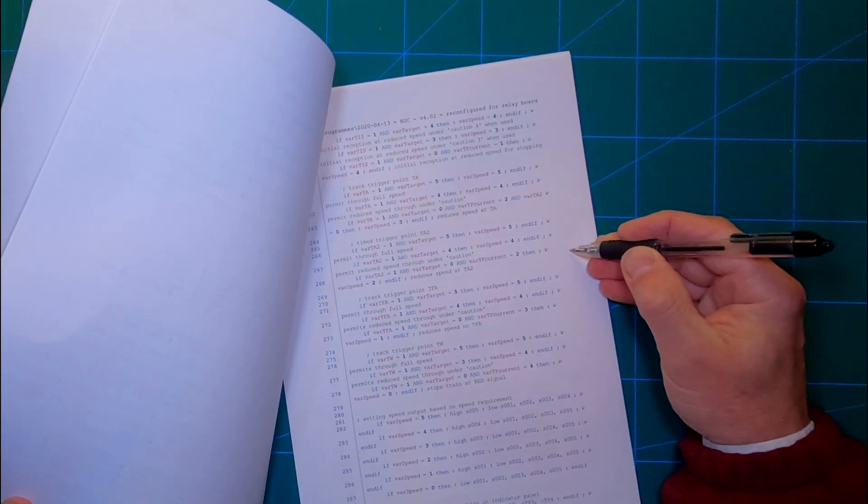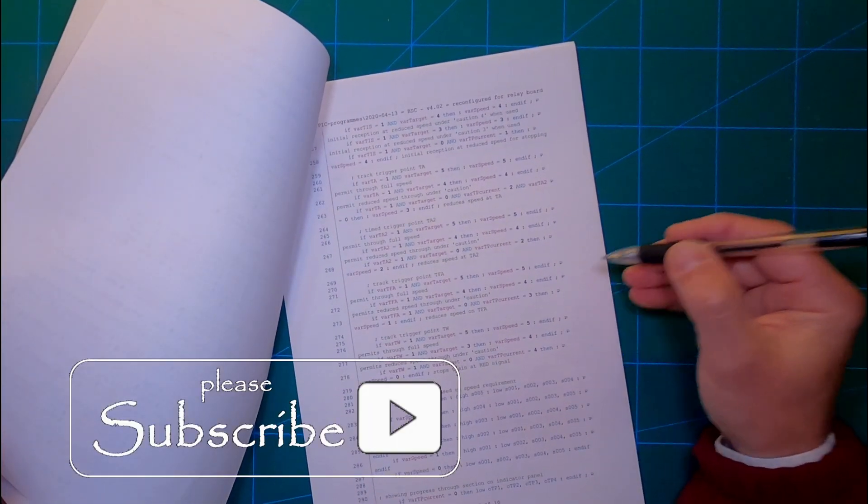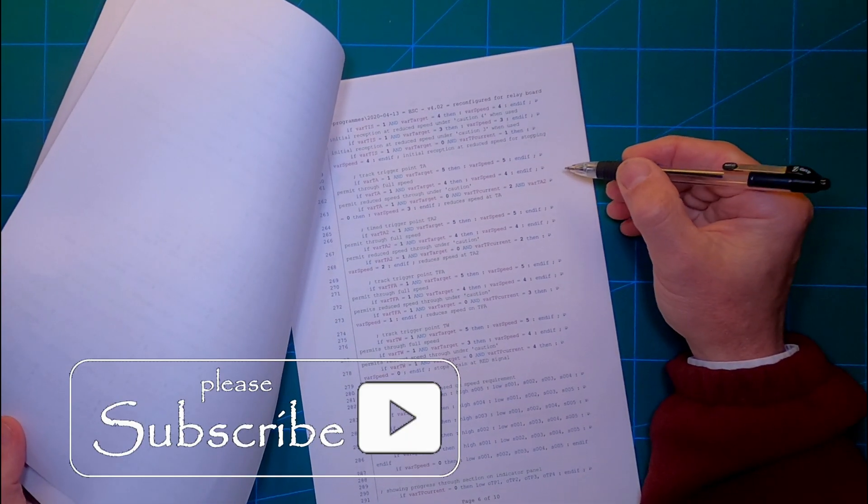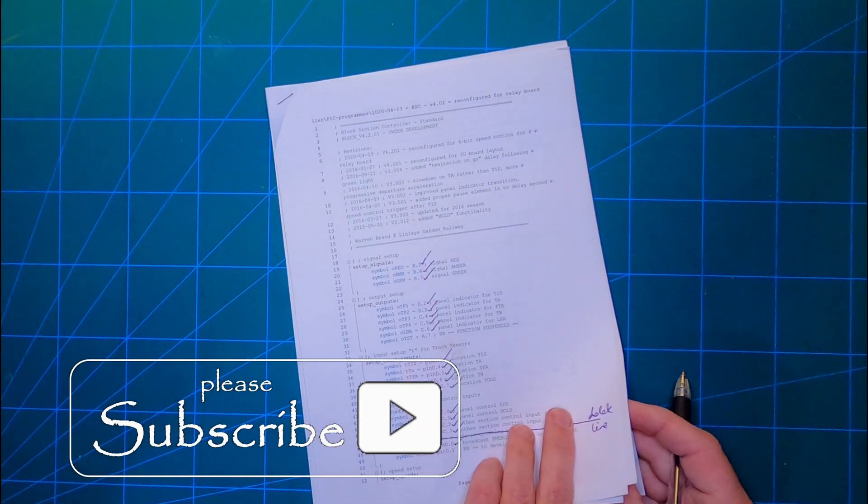Another subroutine controls the outputs to the relay block to manage the train speed. Maybe I'll go into more details in a later video if you're interested. If so, please let me know in the comments below.